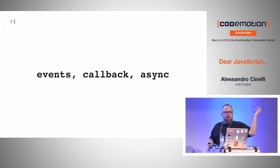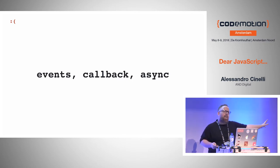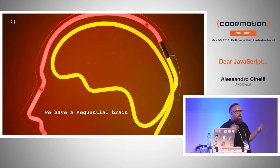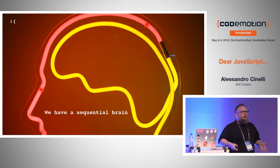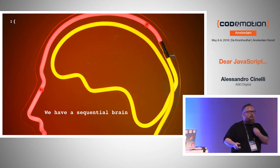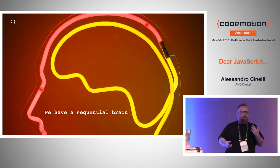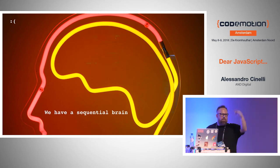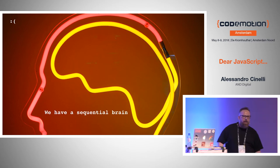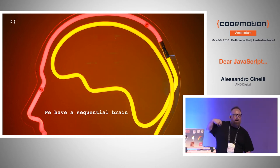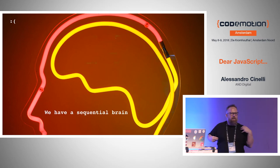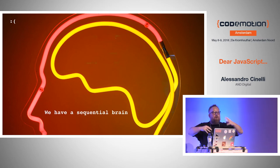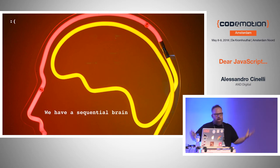Maybe or maybe not, because I had a huge influence from other architectures and languages, but also because we have a sequential brain. Consciously, we can do just one thing at a time. When you go to the grocery store, you have a list of things — one after another. So it wasn't easy for me at the beginning to read the code and understand how things work.